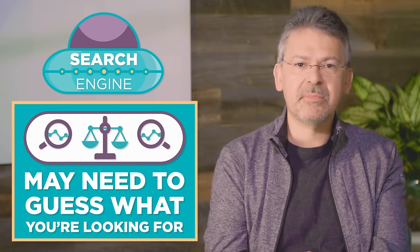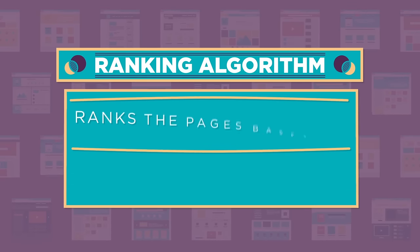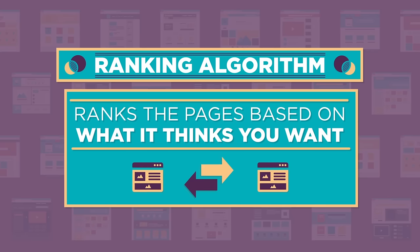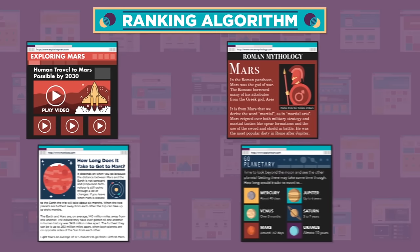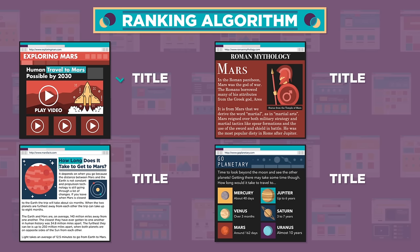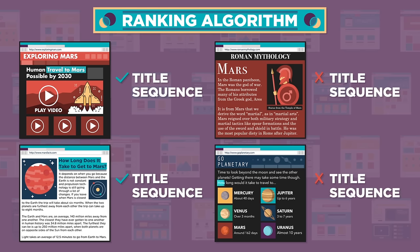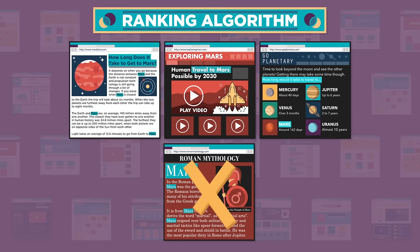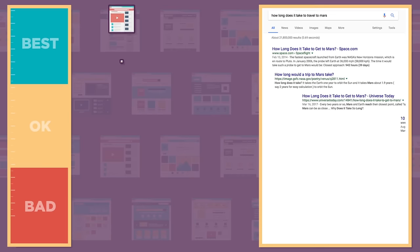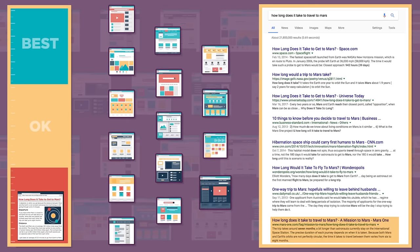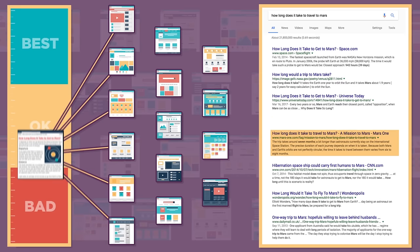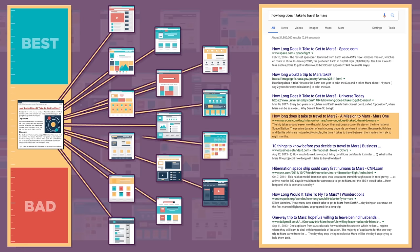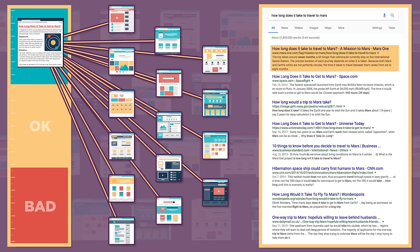This is where it gets tricky because the search engine may need to guess what you're looking for. Each search engine uses its own algorithm to rank the pages based on what it thinks you want. The ranking algorithm might check if your search term shows up in the page title, or if all of the words show up next to each other, or any number of other calculations that help it better determine which pages you'll want to see and which you won't.